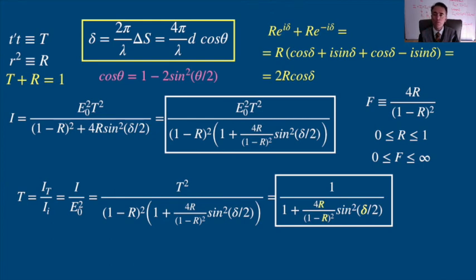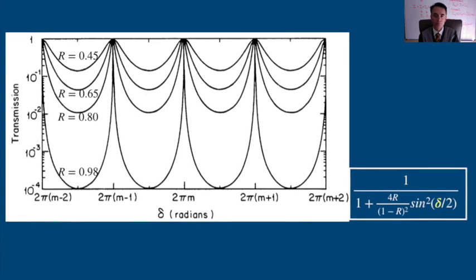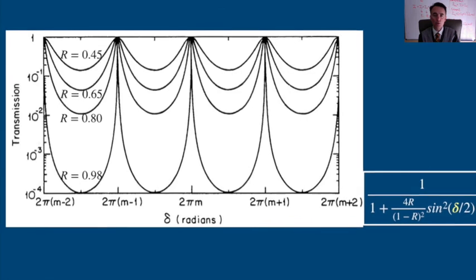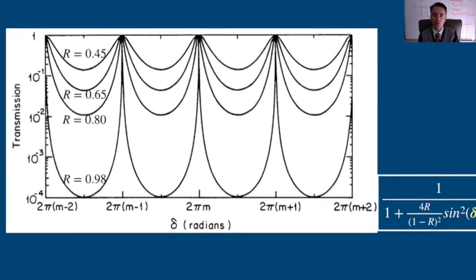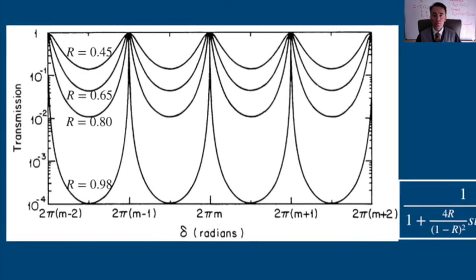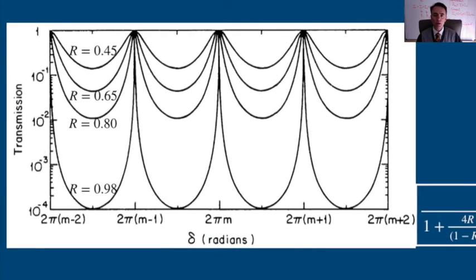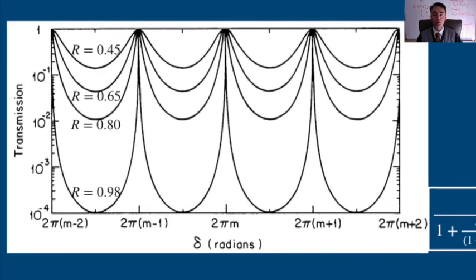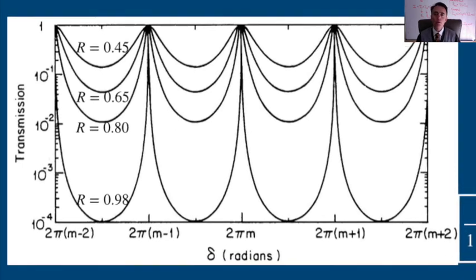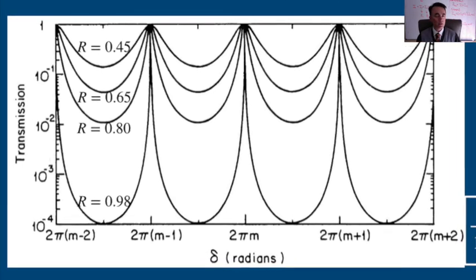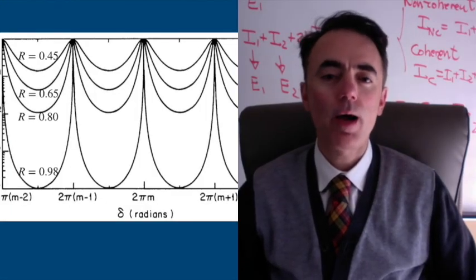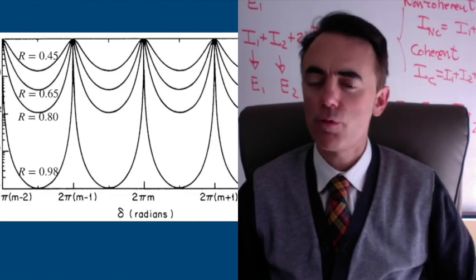Well, we can see that the contrast between bright and dark fringes is very dependent on the reflectivity. But for a high reflectivity, we get to obtain very high contrast, a very good visibility. The higher the reflectivity, the narrower the transmissivity peaks. This interferometer gives better profile of the transmissivity than the Michelson interferometer.